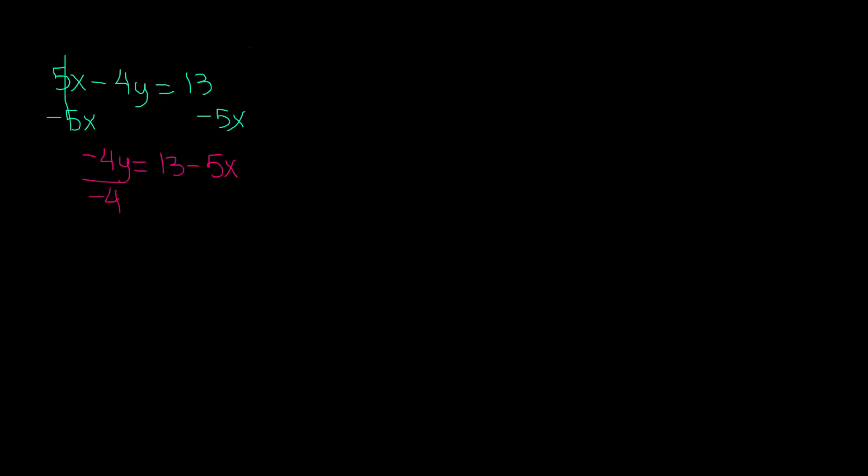Divide by negative 4 on both sides. We're left with y equals 13 divided by negative 4. If we do 13 divided by negative 4, we know that 4 goes into 13 three times because 4 times 3 is 12. So it will be negative 3. We're left with 1. Let's just do it on the side so we don't confuse you.